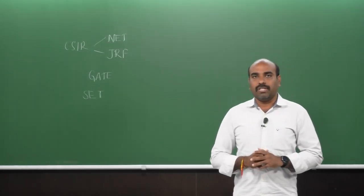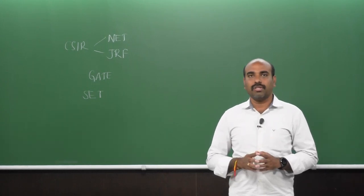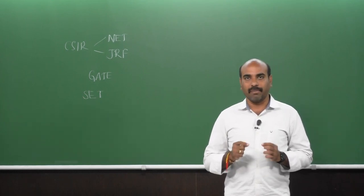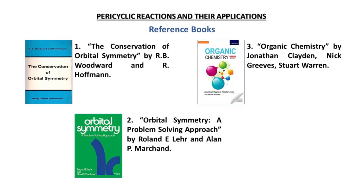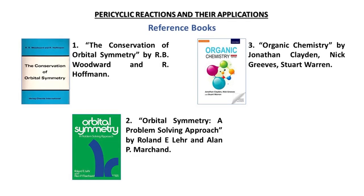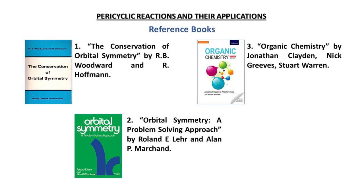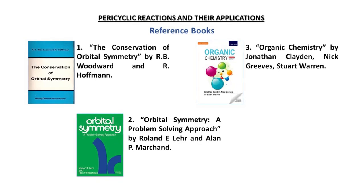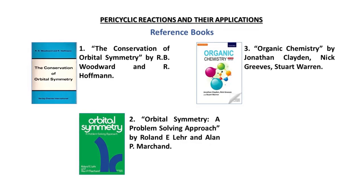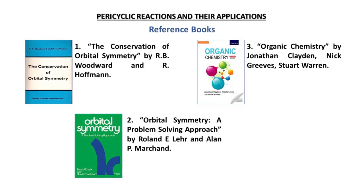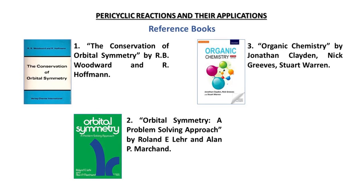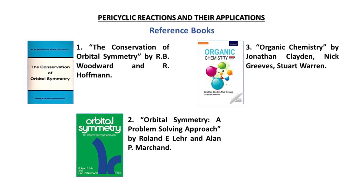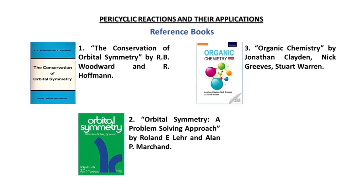For further reading, I suggest the book by Professor S. Sankararaman, Professor at the Chemistry Department, IIT Madras. Other recommended books are: 'The Conservation of Orbital Symmetry' by R. B. Woodward and Rudolf Hoffmann; 'A Problem Solving Approach: Orbital Symmetry' by Ronald E. Lehr and Alan Marchand; and 'Organic Chemistry' by Clayden and Warren, which is also a good reference for understanding pericyclic reactions.